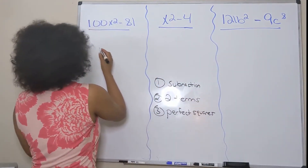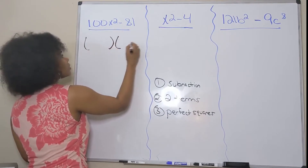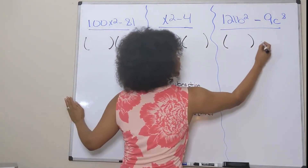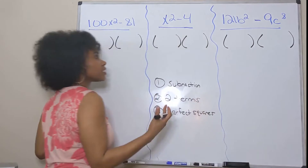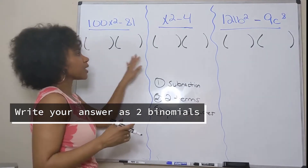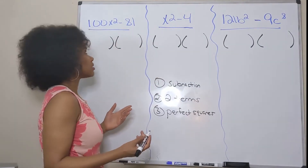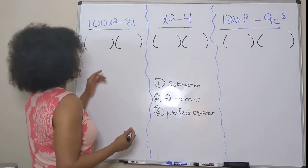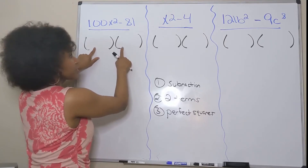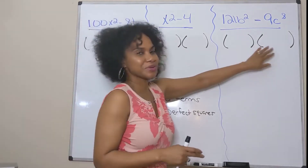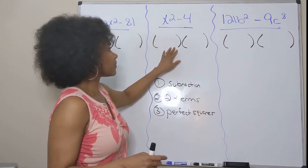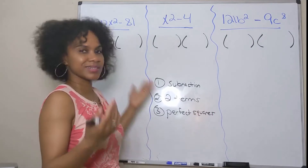We're going to write it as a product of binomials, so I'm going to have two terms in each set of parentheses — that's what a binomial is. You take the square root of your first term and let that be the first term of each binomial, then take the square root of your last term for the last term of each binomial, and each one will just have a plus and a minus.